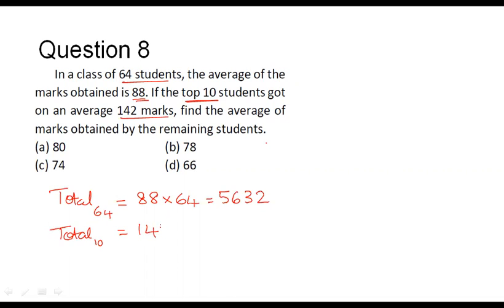That is 142 being the average, 10 we are considering top 10 students, so number of students is 10. We can see that 142 times 10 corresponds to 1420. That is the total marks obtained by the top 10 students.